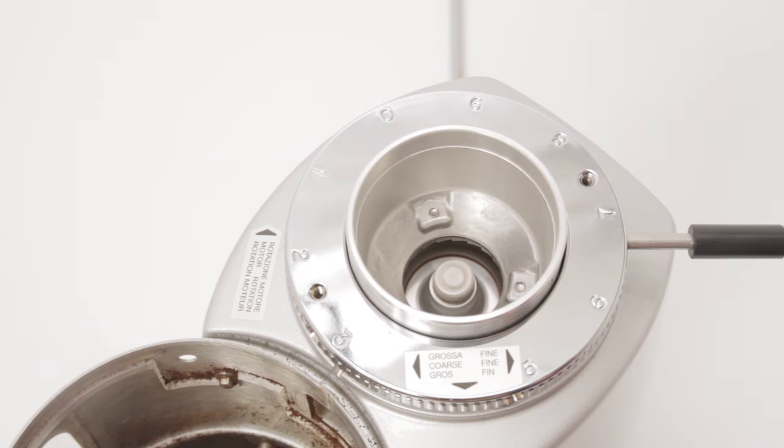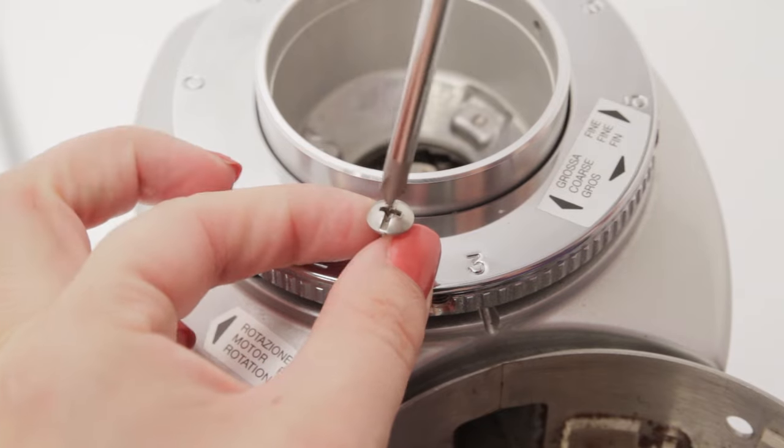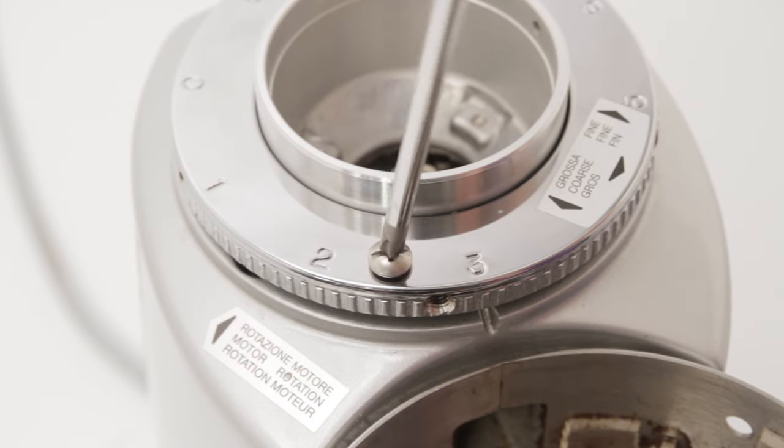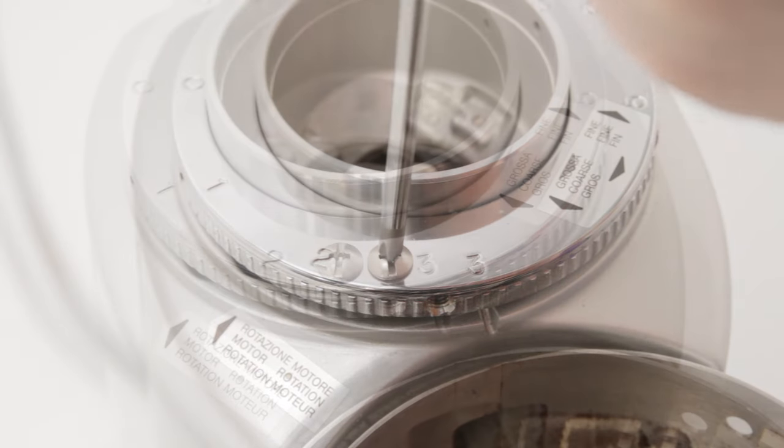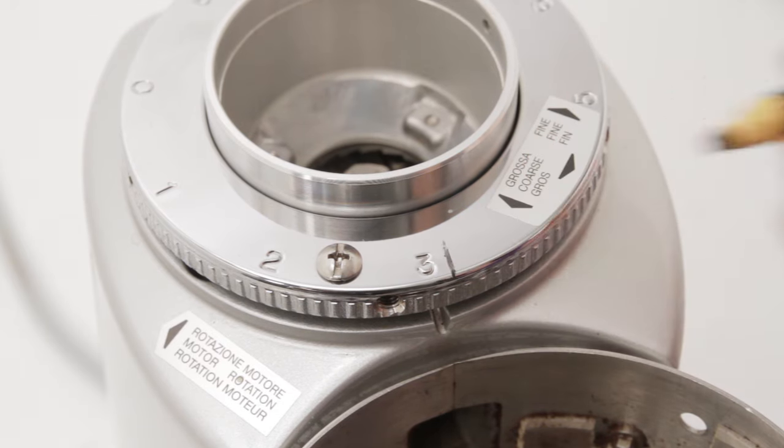Your grinder is now set to zero, basically it's finest possible grind setting. Reinstall any adjustment stop screws. The numbers on the adjustment collar for most grinders are arbitrary. We're using a wax pencil here to mark the zero grind point for future reference.